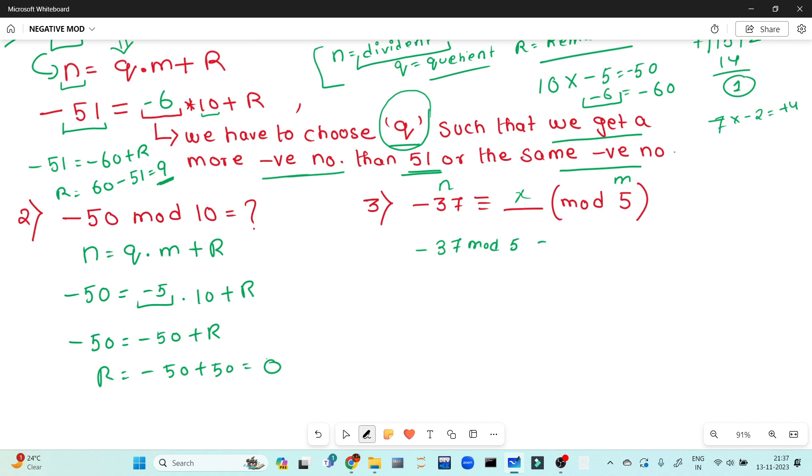Now for method 2. We already discussed the concept: n equals q times m plus r. Let's apply this to minus 37. If we have minus 37 and we want to find the modulus with 5, we need to choose q appropriately.